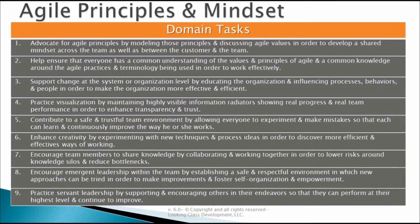Third, we need to support change at the system or organization level by educating the organization and influencing processes, behaviors, and people in order to make the organization more effective and efficient. Fourth, we need to practice visualization by maintaining highly visible information radiators — a key term we'll discuss later — showing real progress and real team performance in order to enhance transparency and trust.